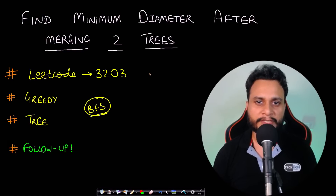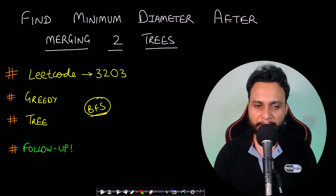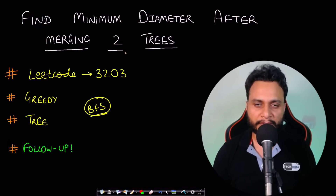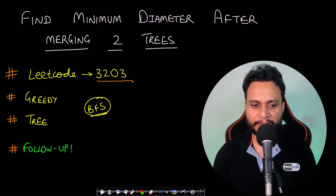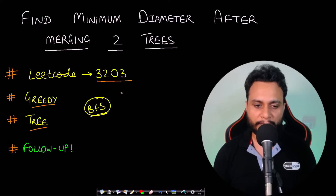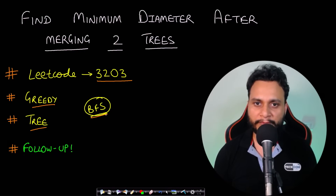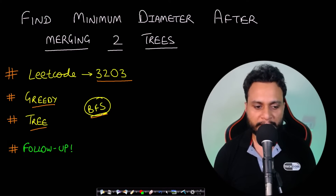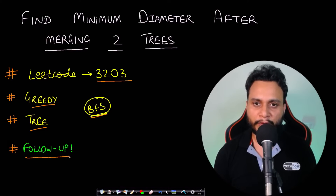Hello guys, welcome back to TechDoze. In this video we will learn about the 'Find Minimum Diameter After Merging Two Trees' problem, which is LeetCode number 3203. This is based on a greedy algorithm on trees. A prerequisite before solving this is to know about BFS — if you don't know about BFS, you can watch my video by clicking on the 'i' button. We will discuss a follow-up problem at the end, so stay tuned.